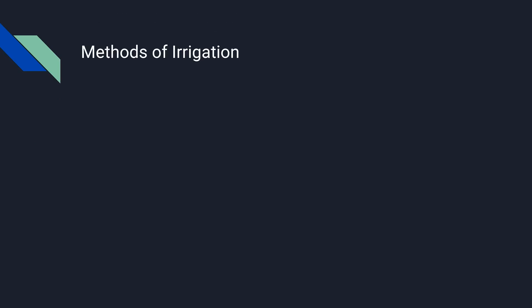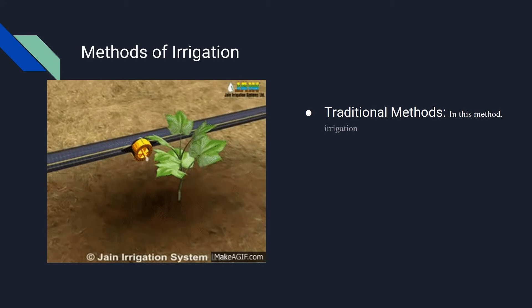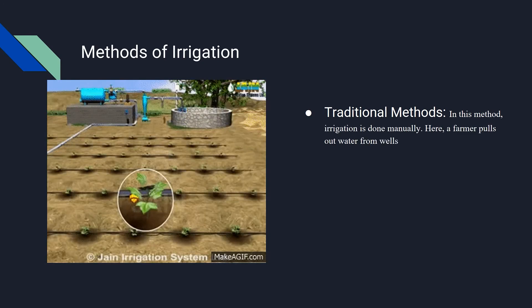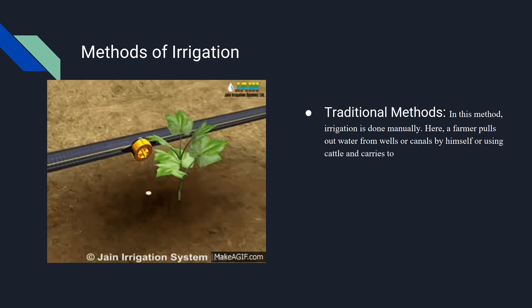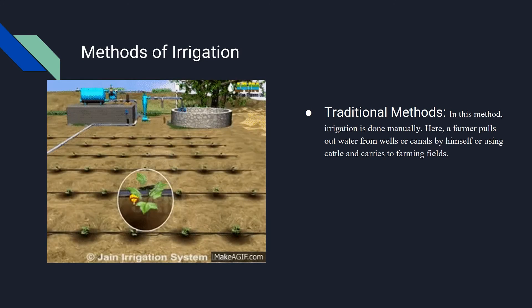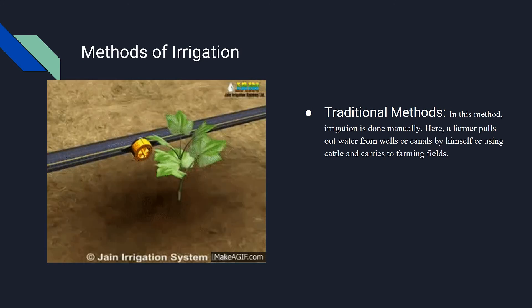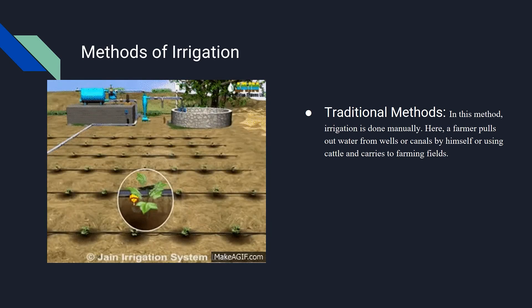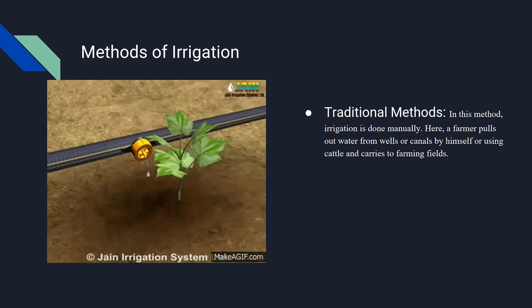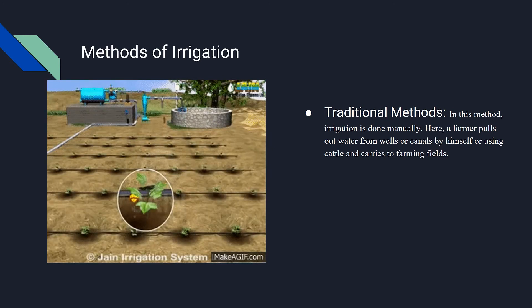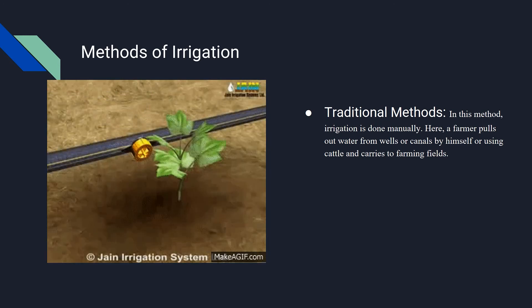Methods of Irrigation. Traditional method of irrigation: In this method, irrigation is done manually. A farmer pulls out water from wells or canals by himself or using cattle and carries it to farming fields. This method can vary in different regions. The main advantage of this method is that it is cheap, but its efficiency is poor because of the uneven distribution of water. Also, the chances of water loss are very high.